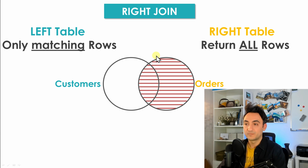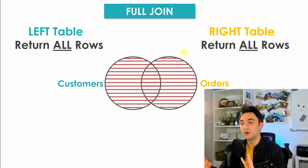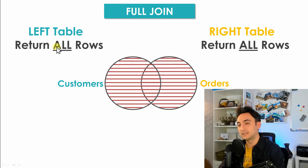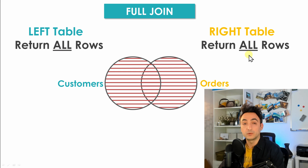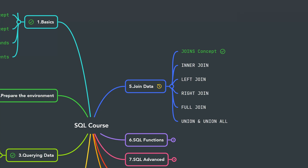The last type is the full join. When you specify full join in your script, you want everything from both tables. From the left table you retain all rows, and from the right table you get all rows as well. As the name says, a full join gives you everything.